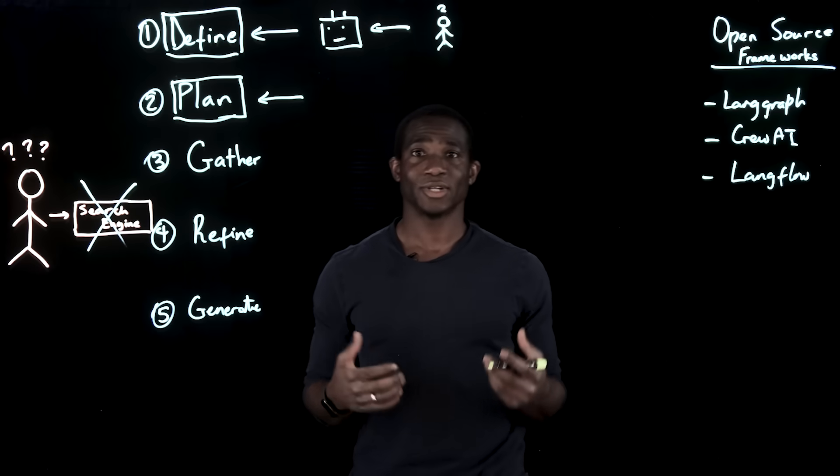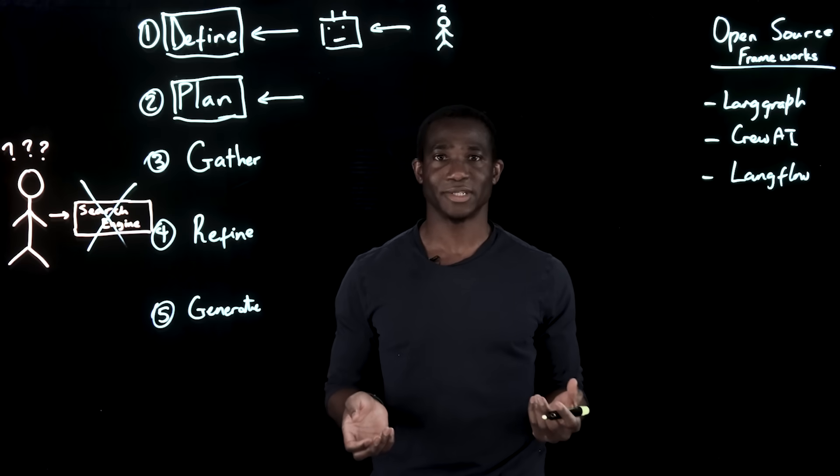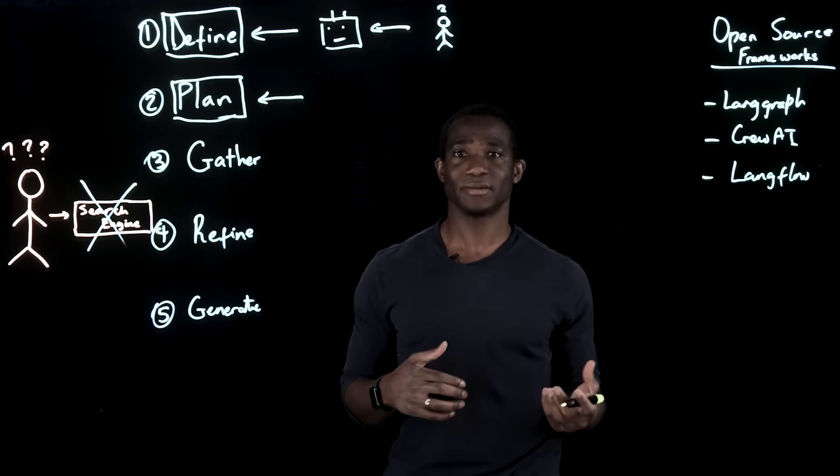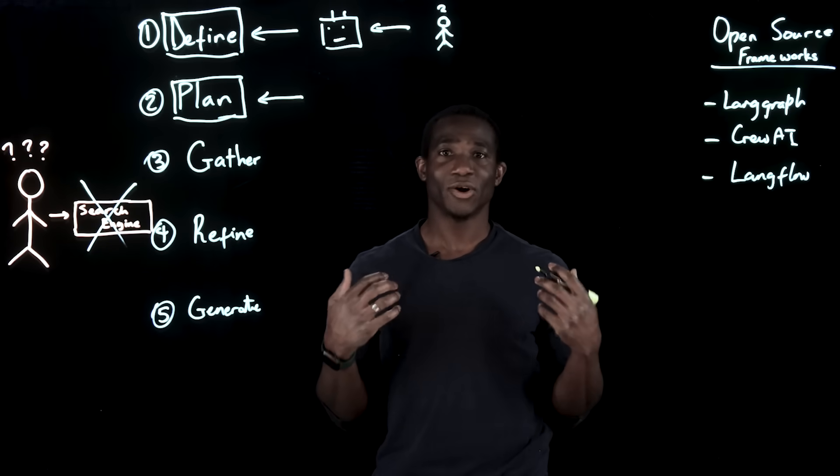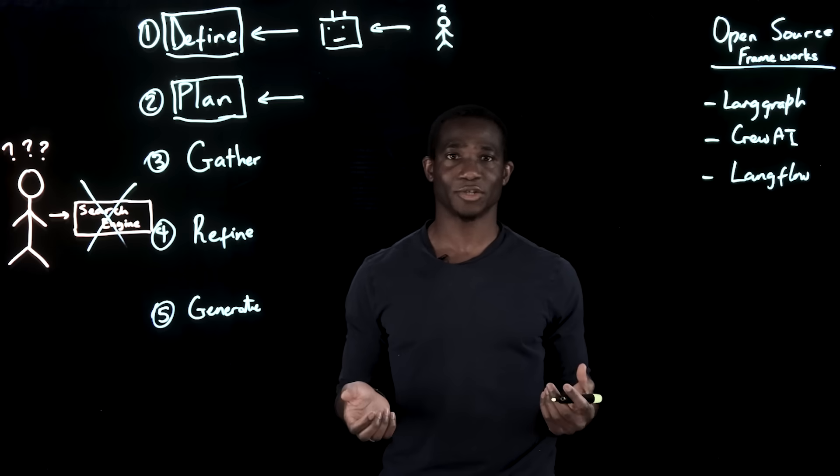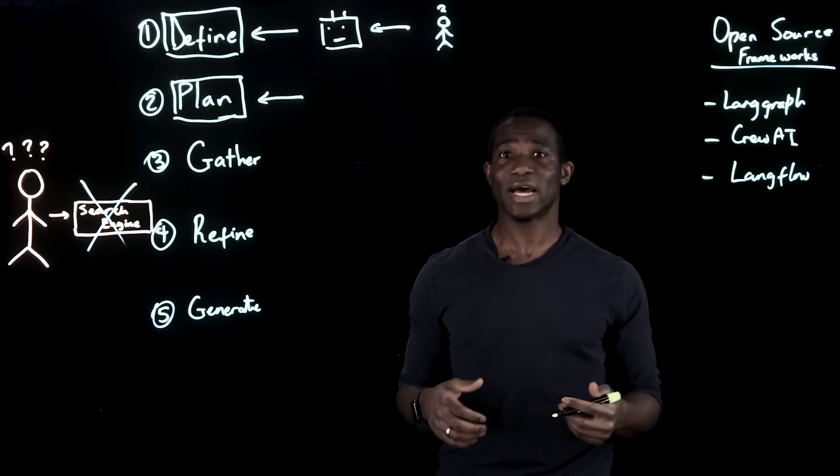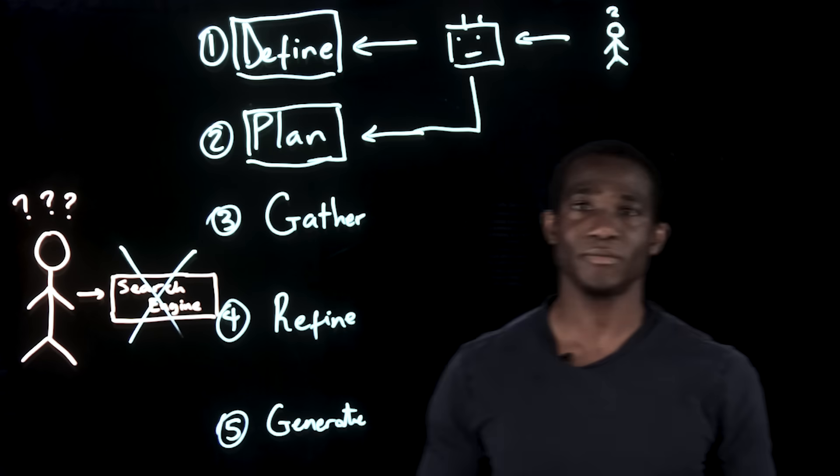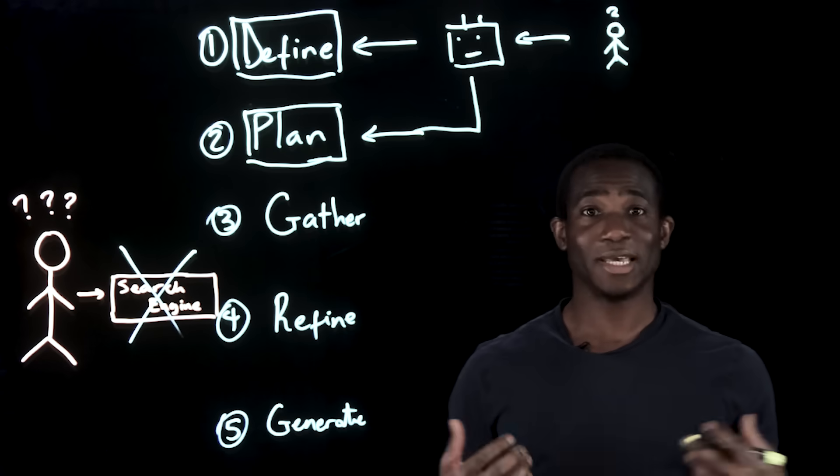Here, you actually have some choices in the implementation. You could have separate agents, which might make sense, which would create oversight and early review and refinement of the research plan. Or you could have the same agent from step one, which is the keep it simple approach.